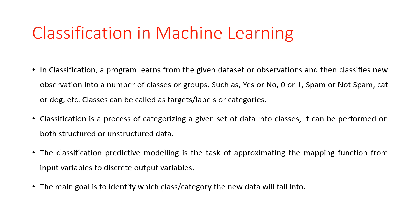In the classification technique, predictive modeling is the task of approximating the mapping function from input variables to the discrete output variable. Mapping means the combination of a relationship between the input variables and the output variable — this is called a mapping function. In classification, we predict a model using the mapping function from input variables to discrete output variables. The main goal is to identify which class or category new data will fall into.